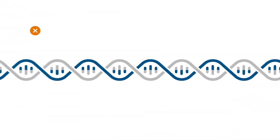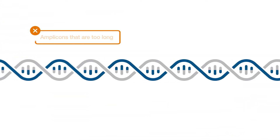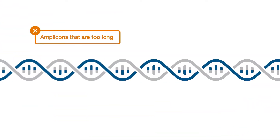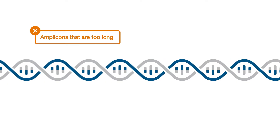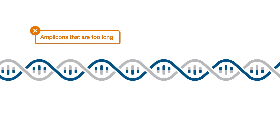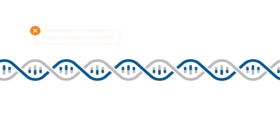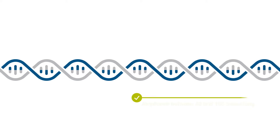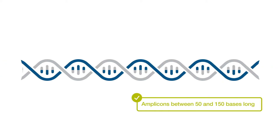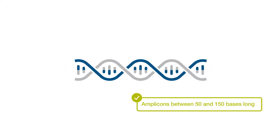First off, size does matter when it comes to amplicons in real-time PCR. Be sure not to make your products too large, as this can contribute to less than optimal PCR efficiency. Instead, design primers so that amplicons are somewhere between 50 and 150 bases long.